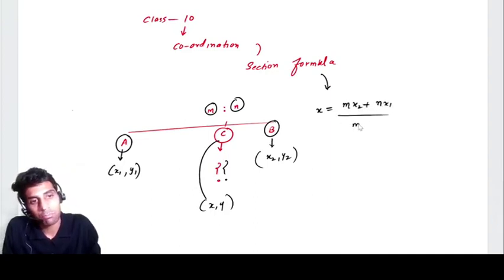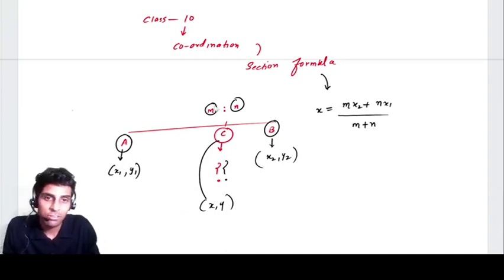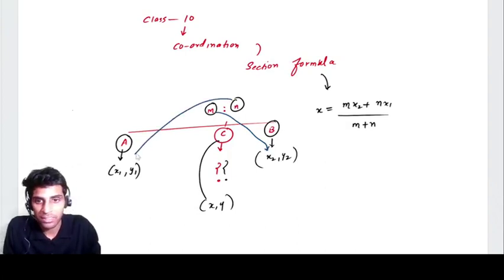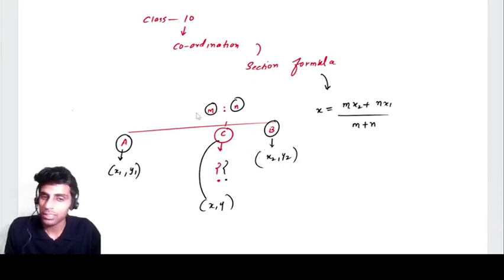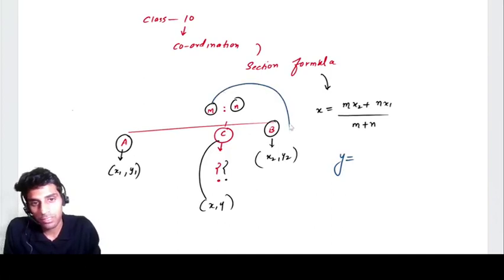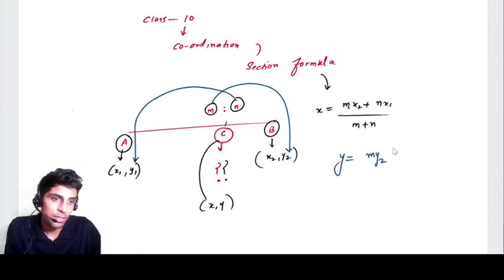Don't worry, it is very easy to learn. You just need to multiply m with x2, you need to multiply n with x1. So there is a cross multiplication and divide it. In the denominator you just need to add both the ratios and keep it as it is. Similarly, we need to derive the y formula. Again we have to follow the cross multiplication. Y is equal to my2 plus ny1 whole divided by m plus n. So this is the section formula.